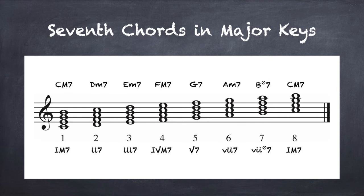In a major key signature, the major seven, major minor seven, minor seven, and half diminished seven chords occur naturally. Memorize the labels and their patterns on each scale degree below. Note the conventions for displaying the various types of seventh chords using Roman numerals. Note in popular music, the B half diminished seven chord is often notated as a B minor seven flat five.